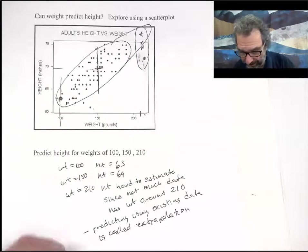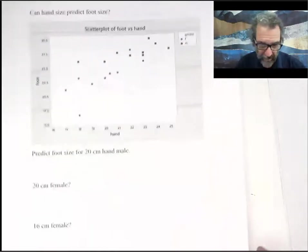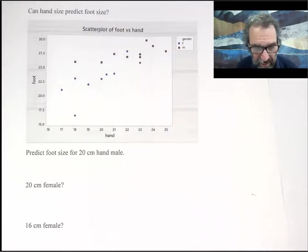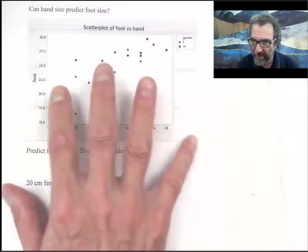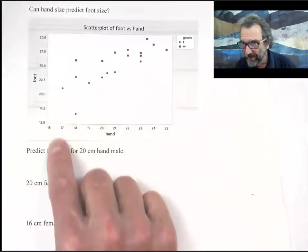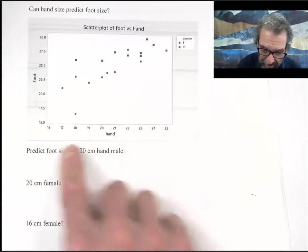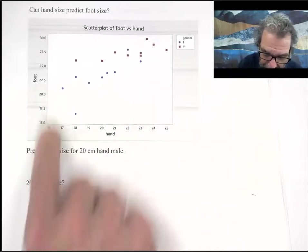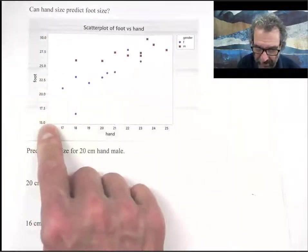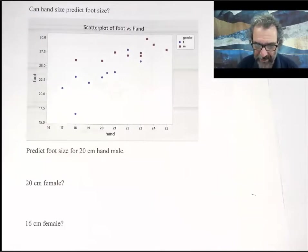Here is some data collected from one of my classes. Down here is hand size in centimeters measured by seeing how far you can spread your fingers like this comfortably. Those numbers are like between 16 and 25 centimeters. And then they would take their shoe off and set their foot on a tape measure. And from each individual, you get a hand and foot measurement. And then you make dots.